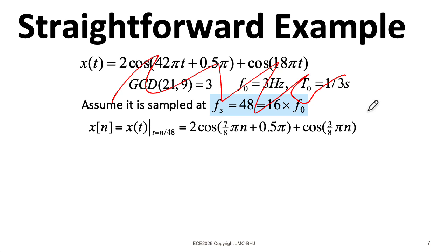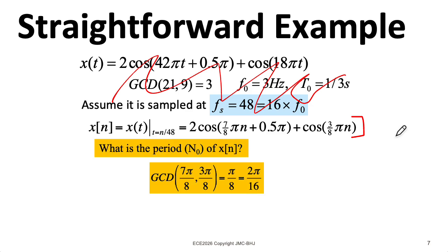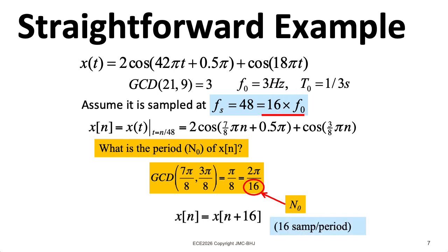Now for a moment, forget all about this stuff up here. Imagine I'm just looking at the signal. I could ask, is the signal periodic? Well, I would find the greatest common divisor of 7π over 8 and 3π over 8, which is just π over 8, or 2π over 16. So the period of the signal is 16, which in retrospect corresponds to our choice of 16 up here. So our period in the discrete time domain is 16.